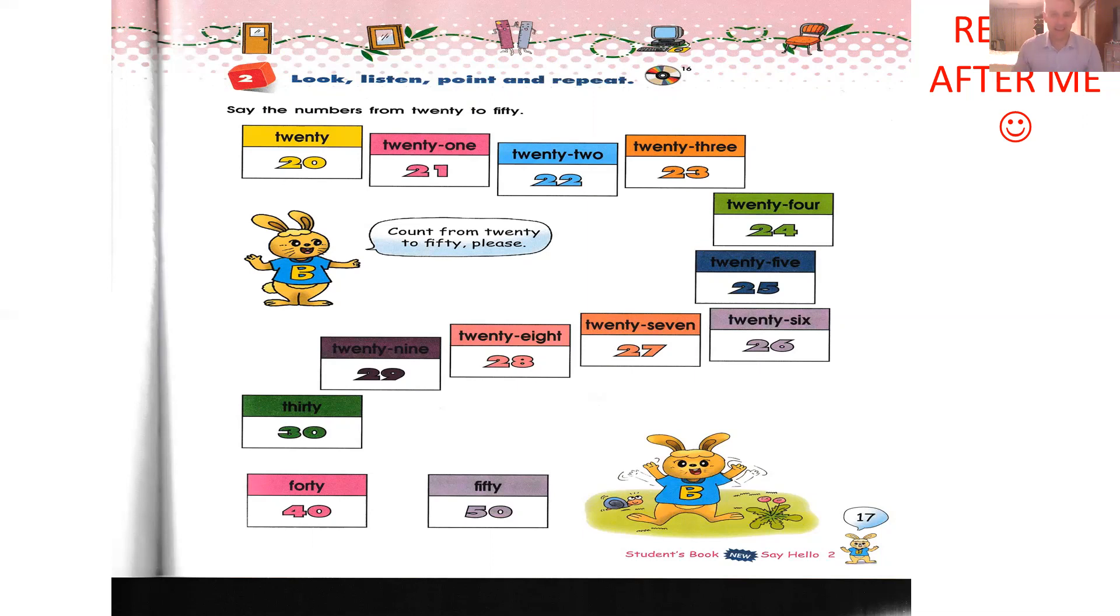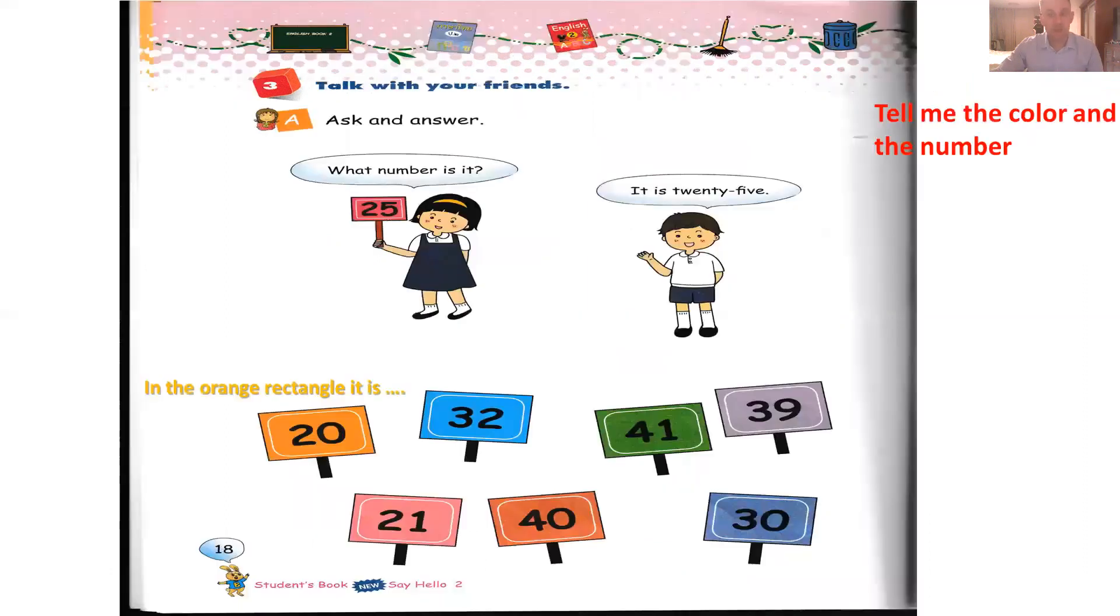Okay, so you can restart this. So 20 to 50. Learn that well. Okay, so now we can go on the next page. So page 18. Ask and answer. What number is it? So the girl has 25. So it is 25.